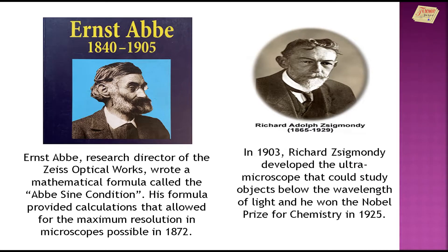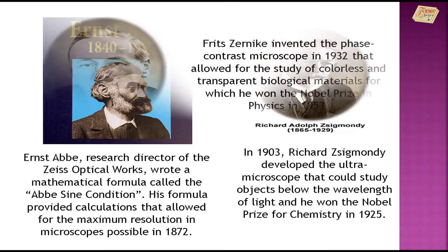In 1903, Richard Zsigmondy developed the ultra microscope that could study objects below the wavelength of light, and he won the Nobel Prize for Chemistry in 1925.